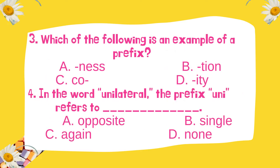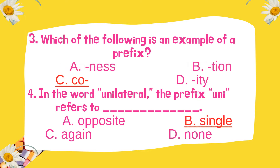Which of the following is an example of a prefix? Number 4: In the word 'unilateral,' the prefix 'uni' refers to? Now check your answer. Which of the following is an example of a prefix? The answer is 'co,' letter C. And 'uni' refers to single, letter B.